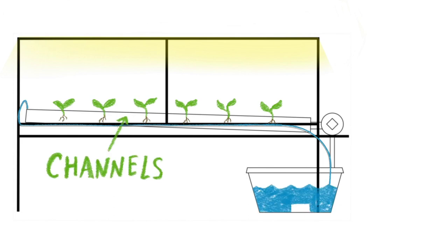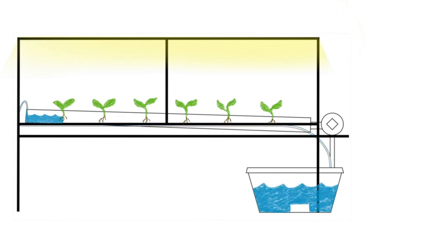Because they are built at an angle, one side of the system is higher than the other side, water flows down the channels slowly at a slant and over the plant roots.